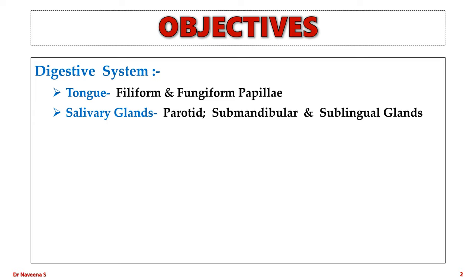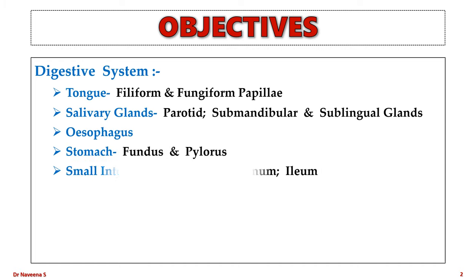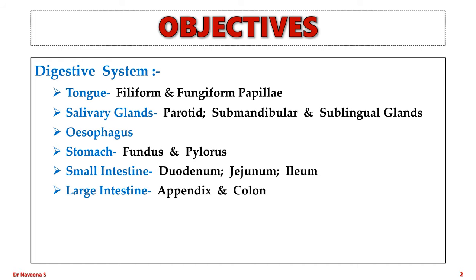Parotid, submandibular and sublingual glands, esophagus, two parts of stomach — fundus and pylorus — small intestine which includes duodenum, jejunum and ileum, two parts of large intestine — appendix and colon — along with liver, gallbladder and pancreas. In total, we will be looking into 15 systemic histology slides.